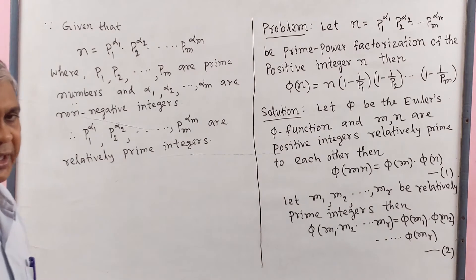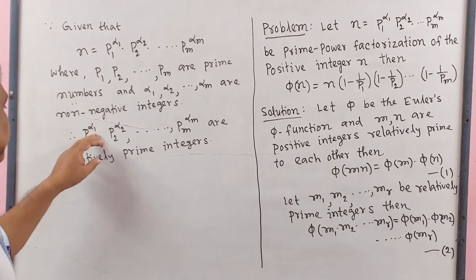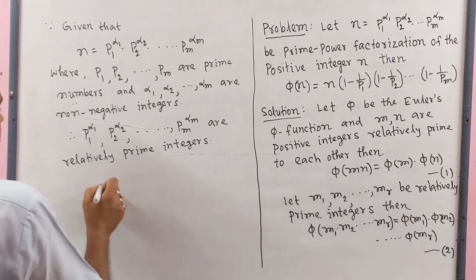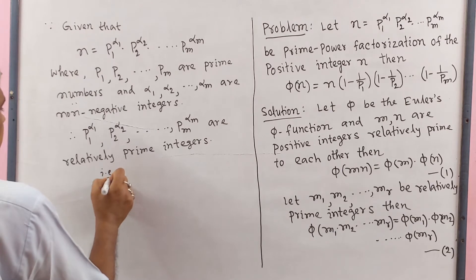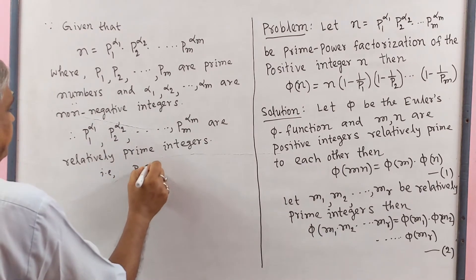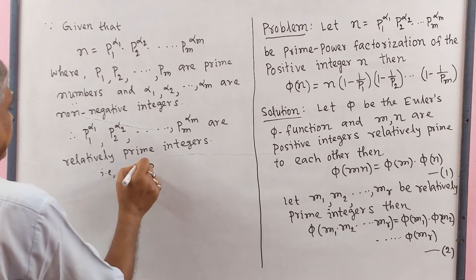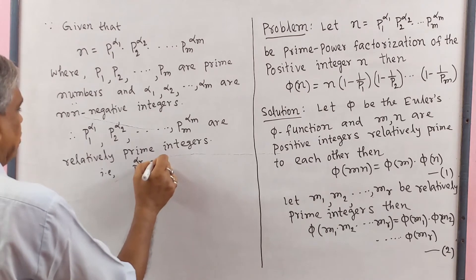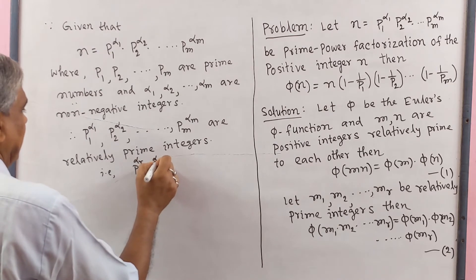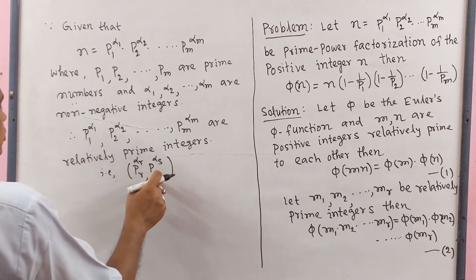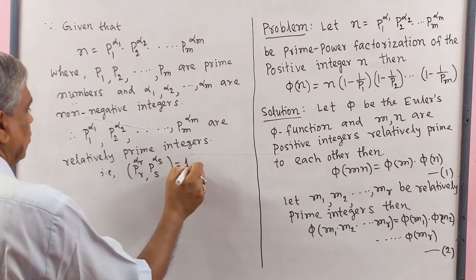Relatively prime means GCD of any two of the integers equals 1. So GCD of P_r to the power alpha r and P_s to the power alpha s equals 1.